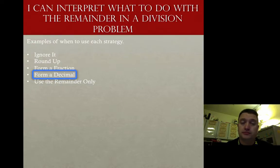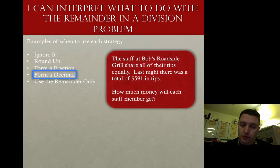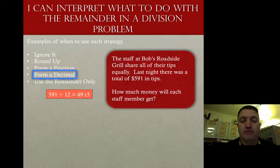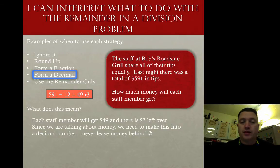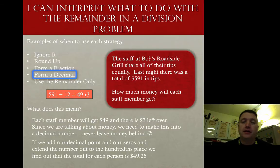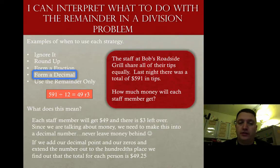Next is form a decimal. The staff at Bob's Roadside Grill share all of their tips equally. Last night, there was a total of $591 in tips. How much money will each staff member get? When I solve this, I get 49 with a remainder of three — $49 with $3 left over. Since we're talking about money, we need to make this into a decimal because we never leave money behind. If we add our decimal point and zeros and extend out to the hundredths place, the total for each person is $49.25.